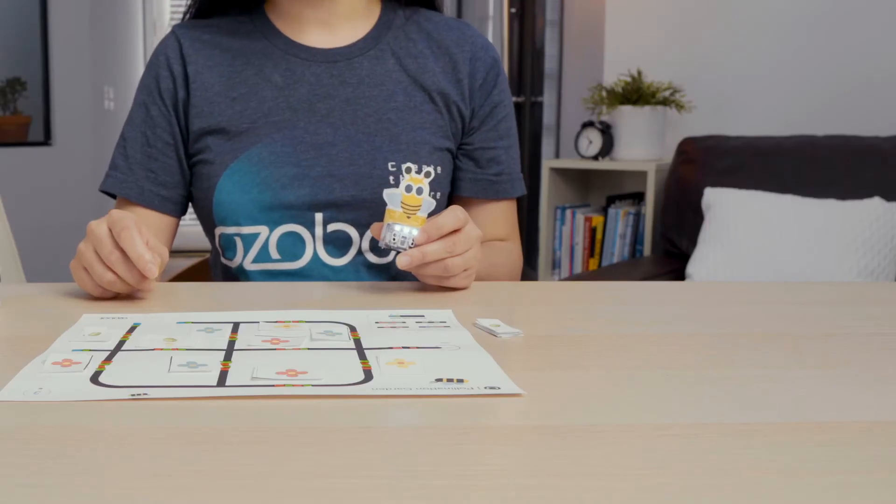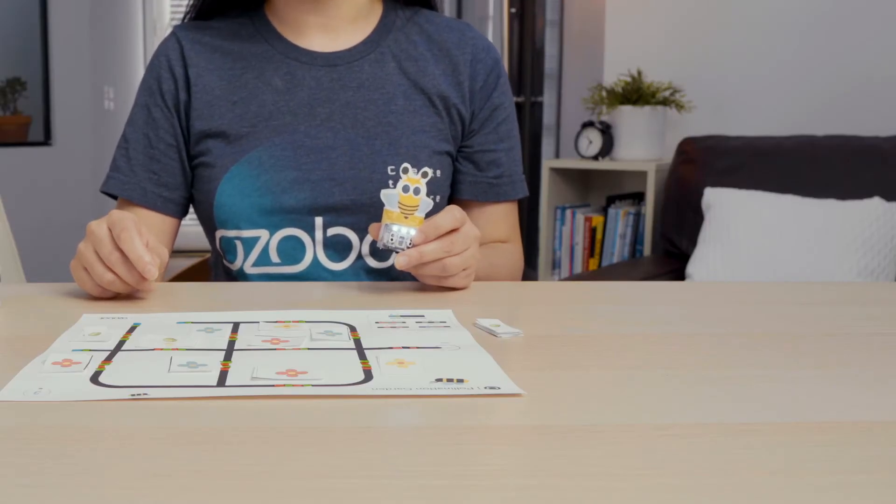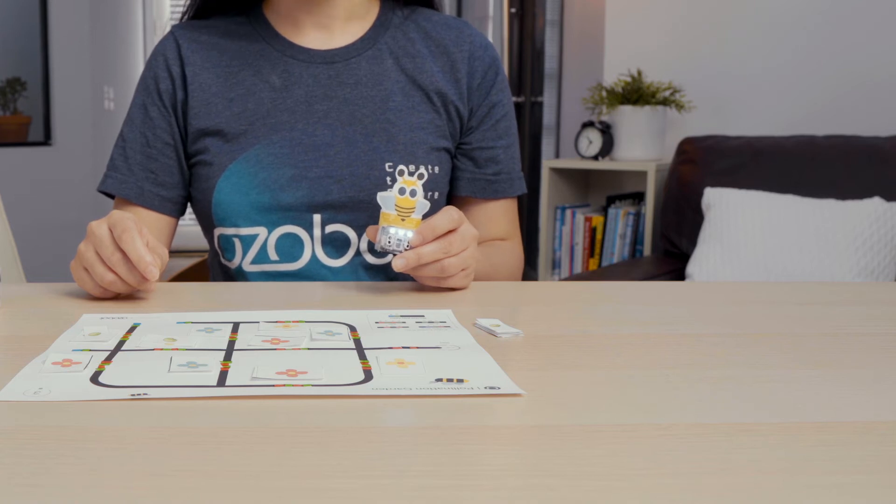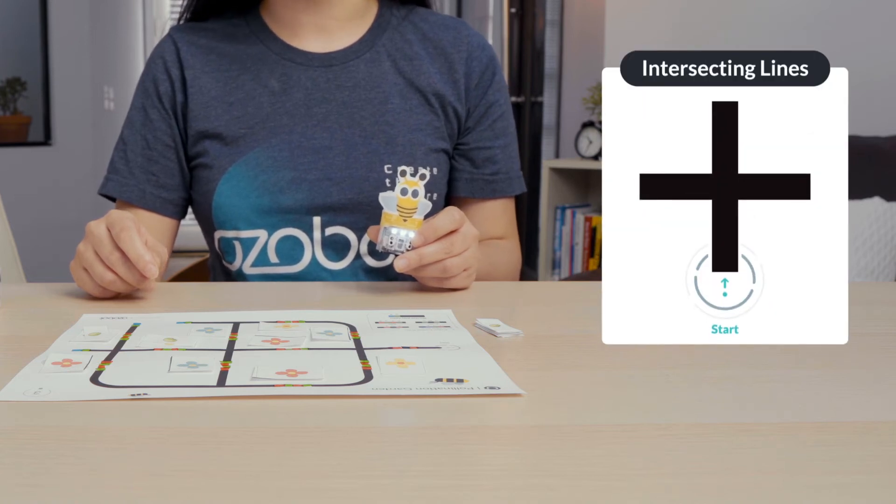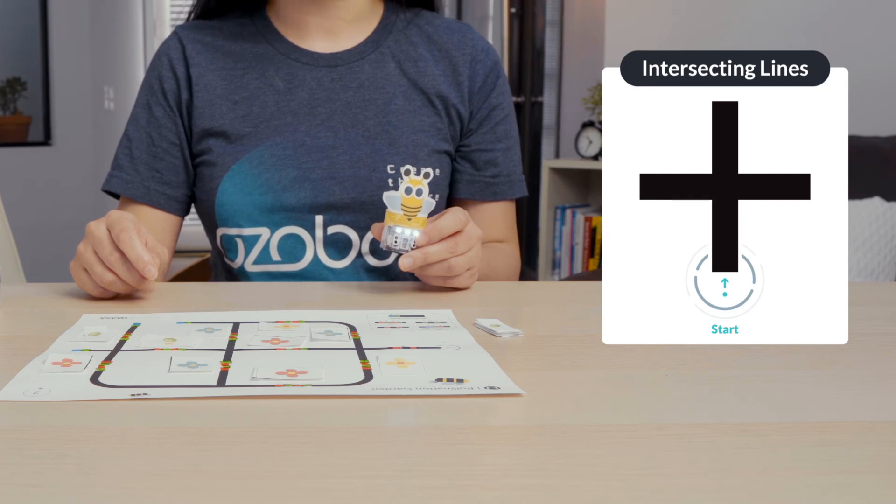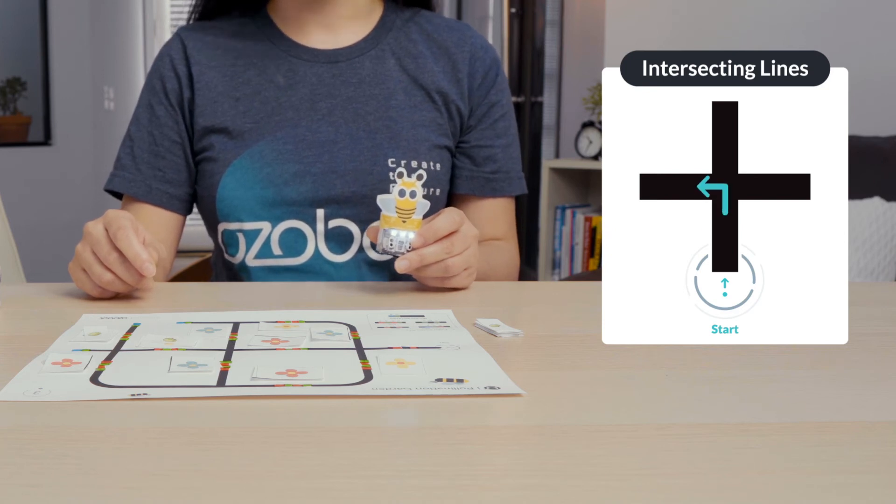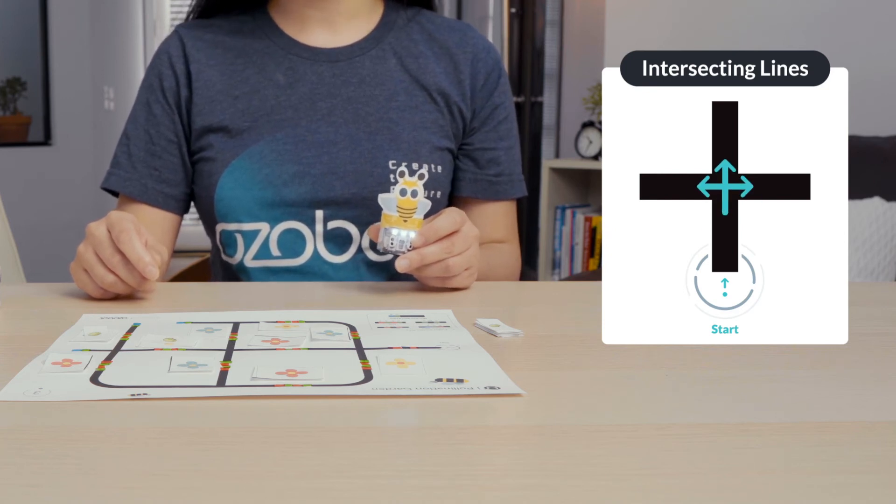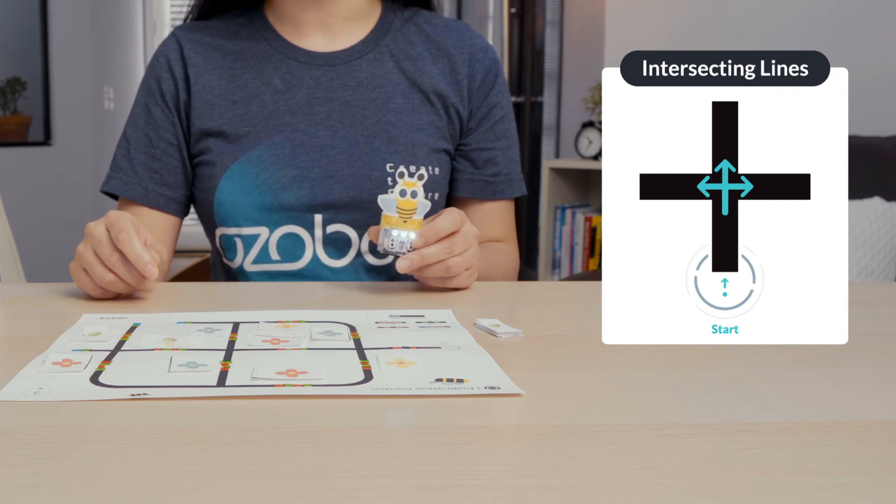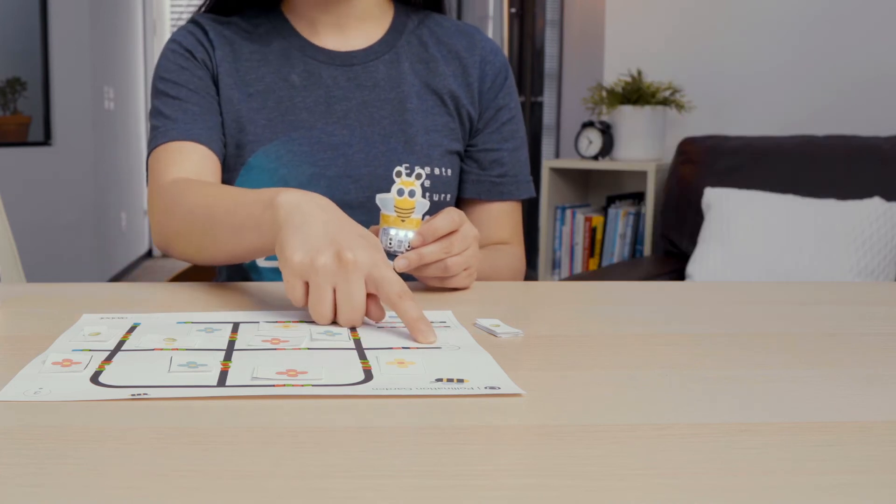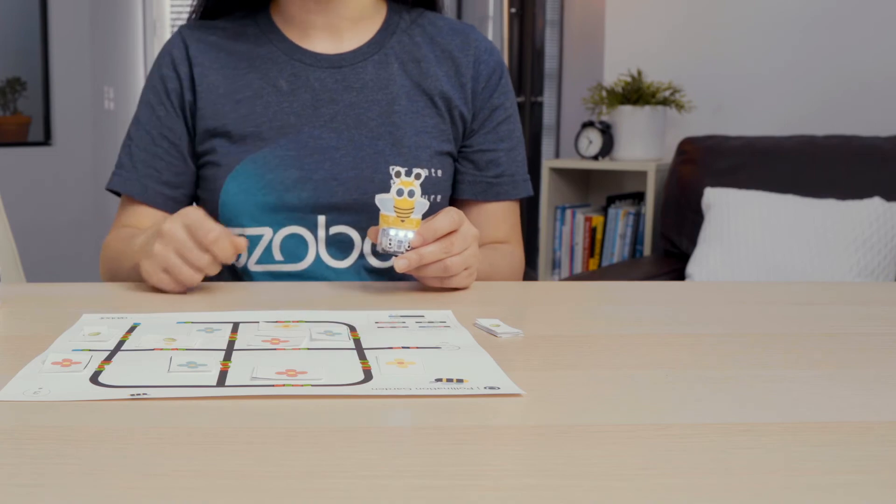Since the paths your bot is traveling along are made of intersecting lines and you have not programmed your bot to move in certain directions, your bot will randomly choose to turn left, right, or move straight. This means each time you run your pollinator from start, it will visit a different number of flowers.